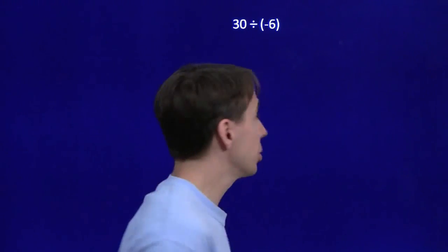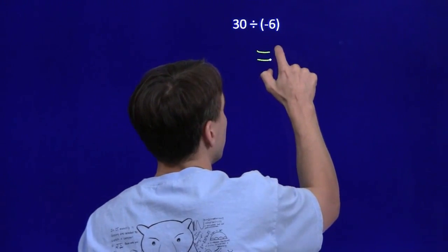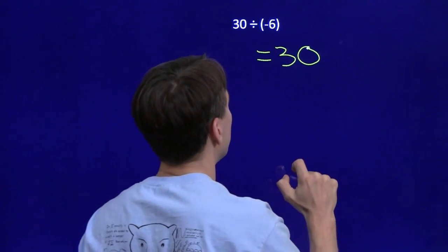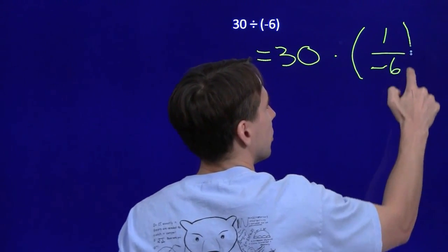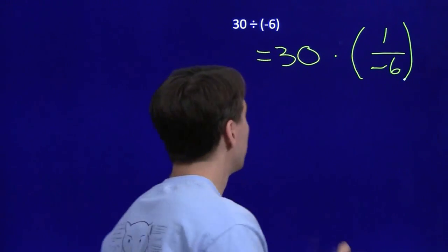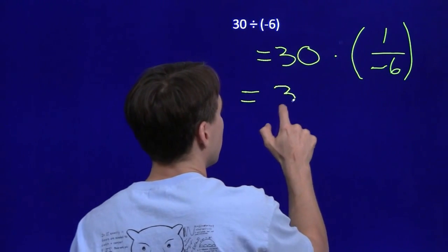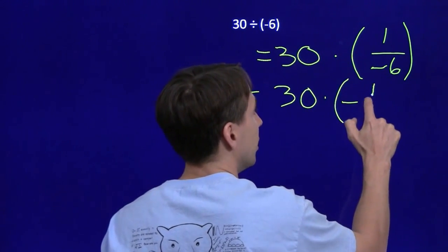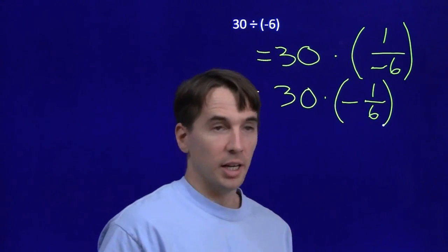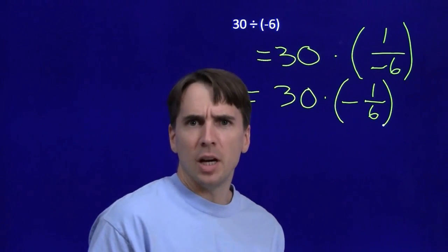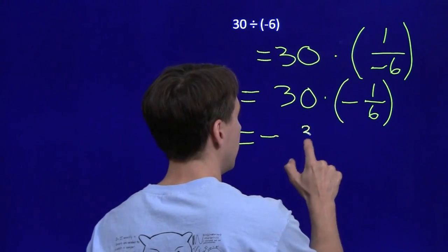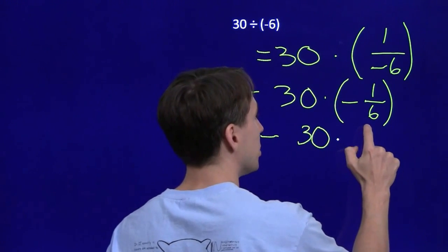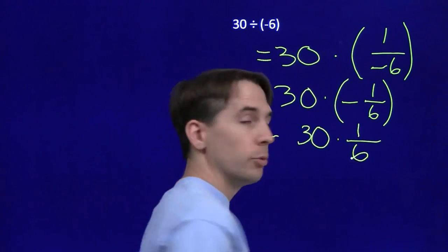So how do we do this? 30 divided by negative 6. Well, we use our definition. Definition of division tells us that this is 30 times the reciprocal of negative 6. Well, the reciprocal of negative 6, you know what that is, that's just the negative of 1 over 6. And positive times a negative, that's a negative.